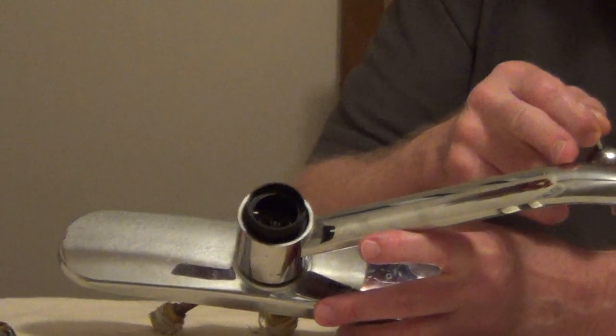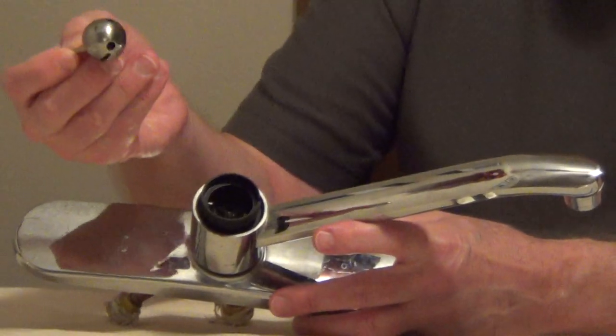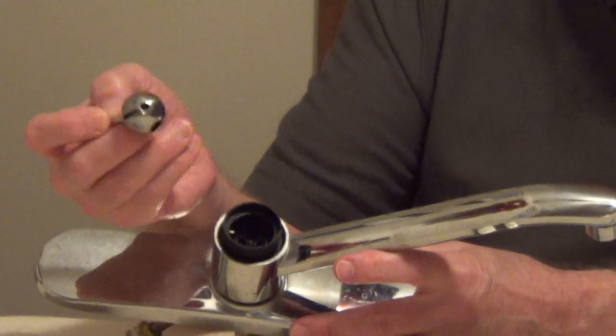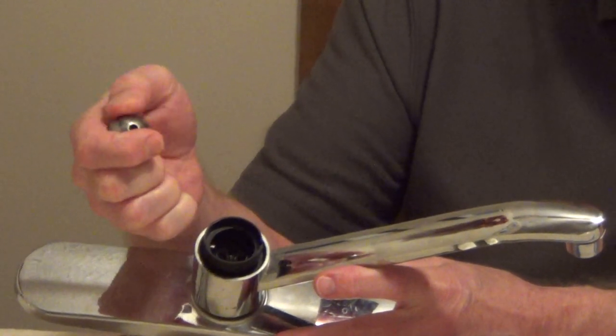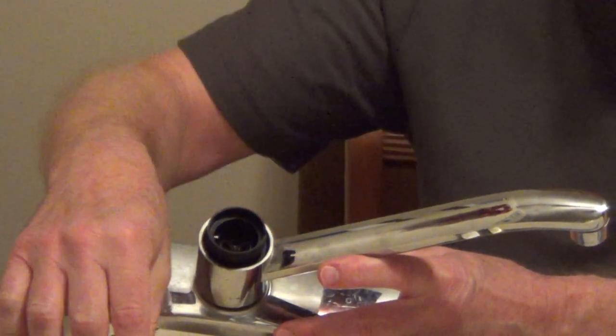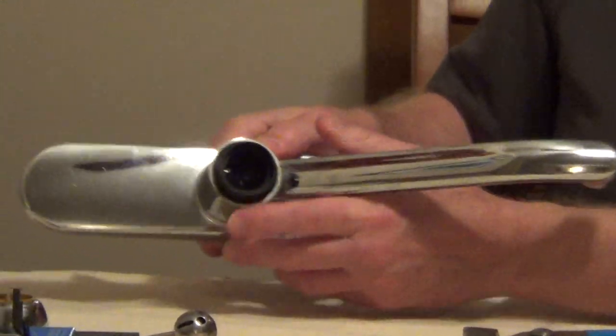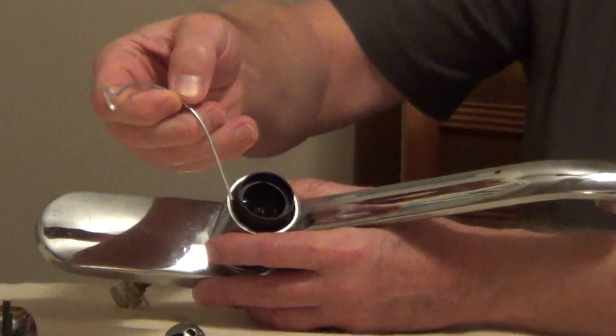If you've had a leak out of the spout and it's dripping, first thing we're going to want to do is clean this off. Get a little vinegar or CLR or something to remove any of the minerals or buildup on this ball. Then we're going to have two seats inside of here, one for the hot side and one for the cold side.